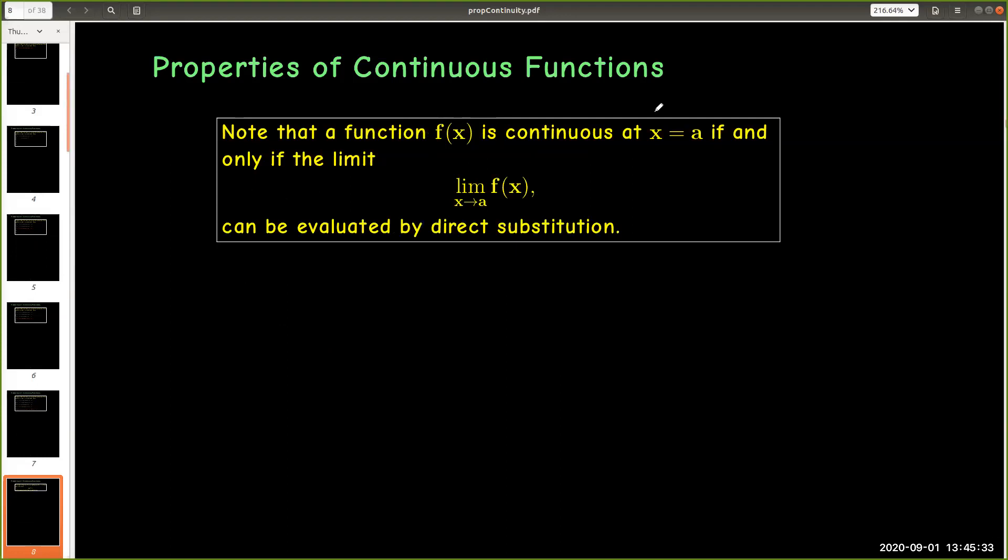Note that from the definition of continuity, a function will be continuous at x equals a if and only if we can evaluate the limit as x approaches a of f of x by direct substitution. That is, we already know of some functions where we can evaluate their limits using direct substitution. So we can conclude that they are continuous.